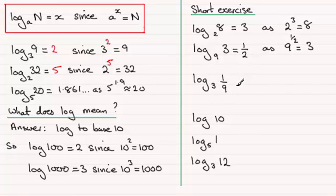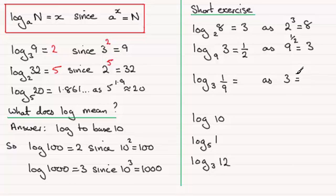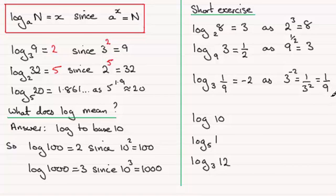Here's another tricky one: the log of 1/9 in base 3. What do we have to raise 3 to in order to get 1/9? It's to the power minus 2. Well done if you got that — 3 to the minus 2 is 1 over 3 squared, and 1 over 3 squared is the same as 1/9.